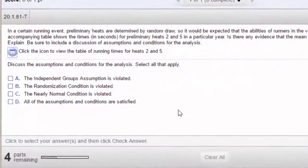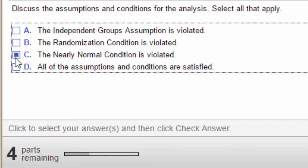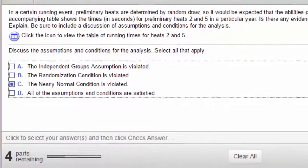The independent groups would mean that heat 2 and heat 5 are independent of each other. That seems safe to assume. The randomization condition means that we need to randomly select runners for each group and the problem states that they are randomly put into each heat. The nearly normal condition means that we have data that is nearly normal and that is violated. So we have one condition that is violated right here.